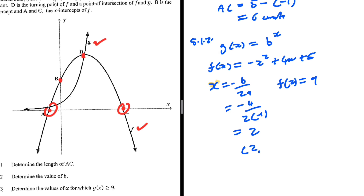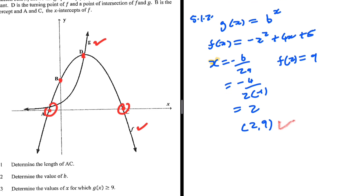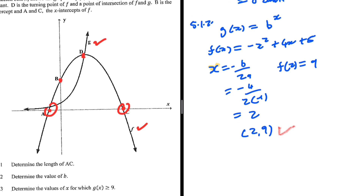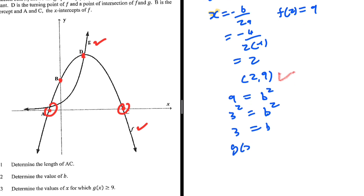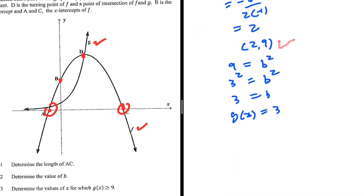So f of 2 equals 9. This point, when x equals 2 and y equals 9, lies on g of x. So we substitute it into g of x: 9 equals b to the power 2. We want the same exponents so we can equate the bases. 3 squared equals b squared, so b equals 3. Therefore g of x equals 3 to the power x.